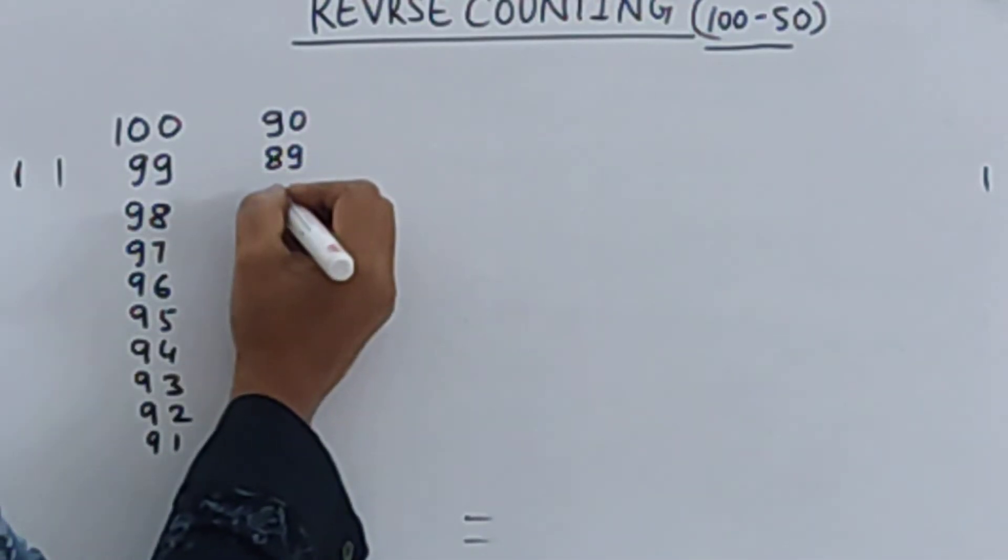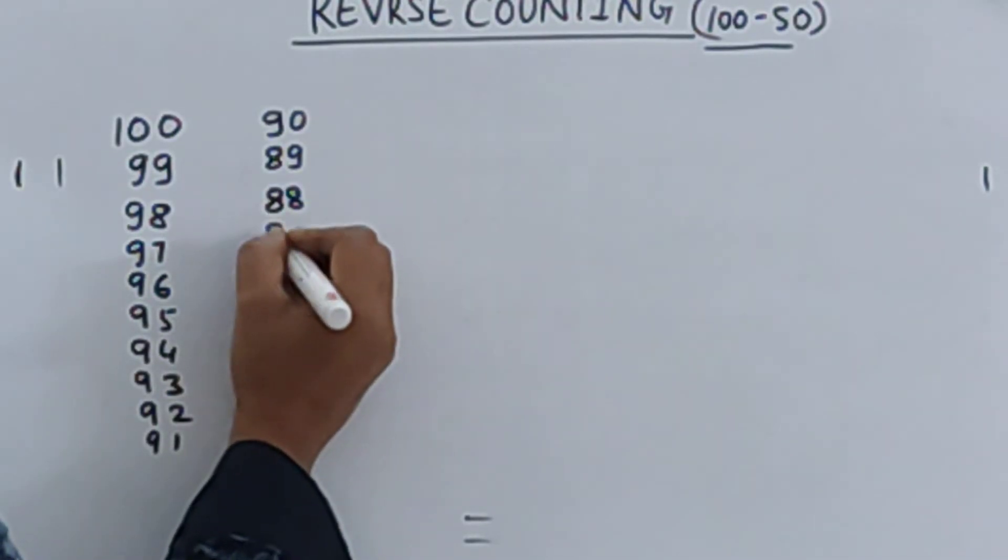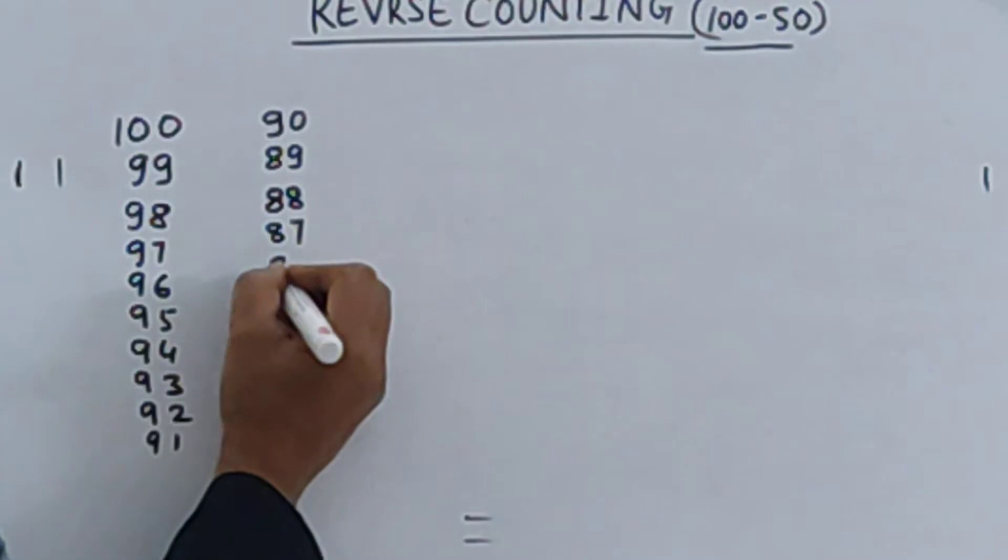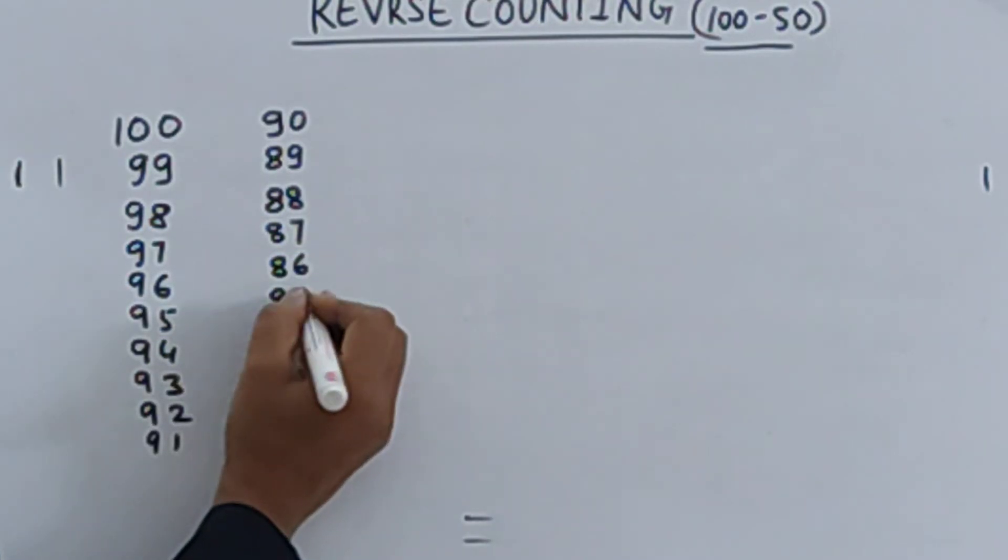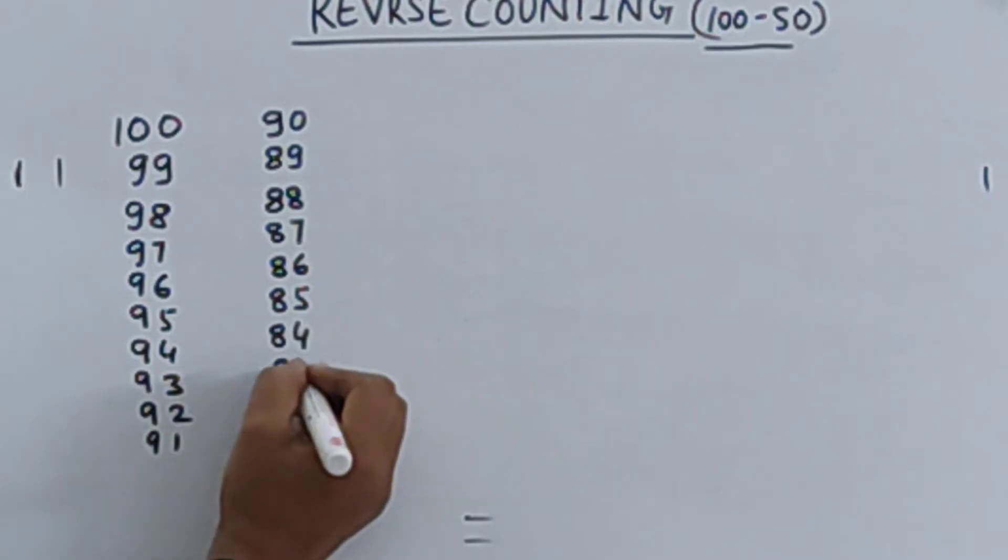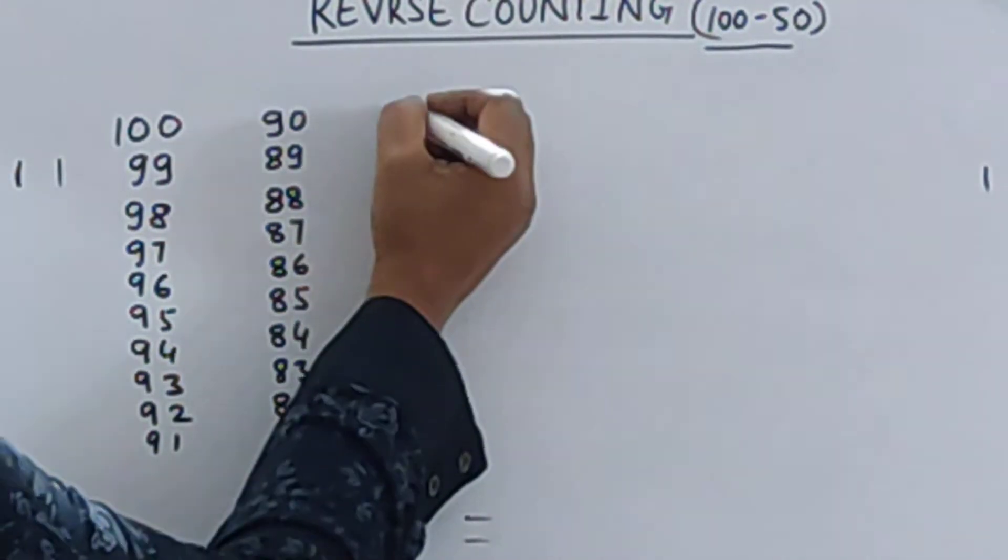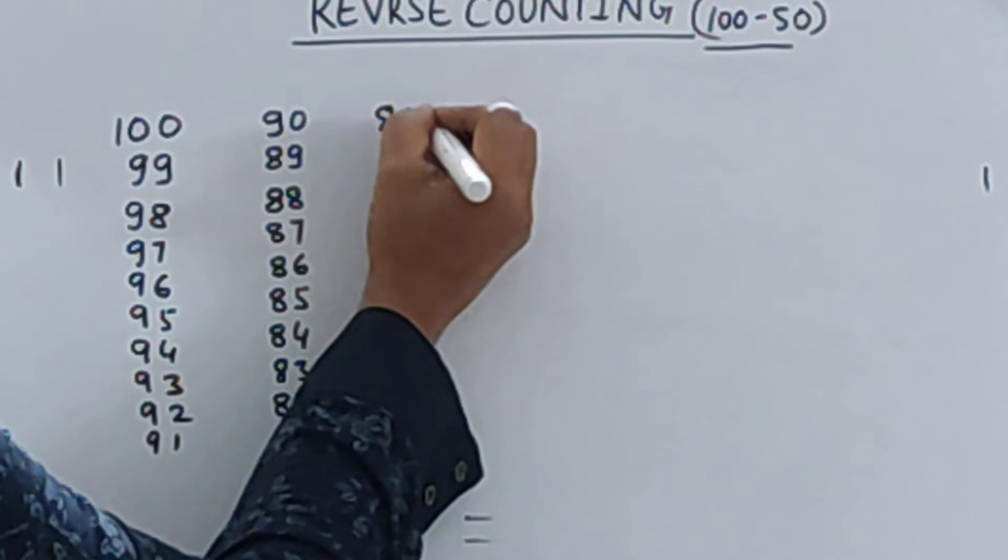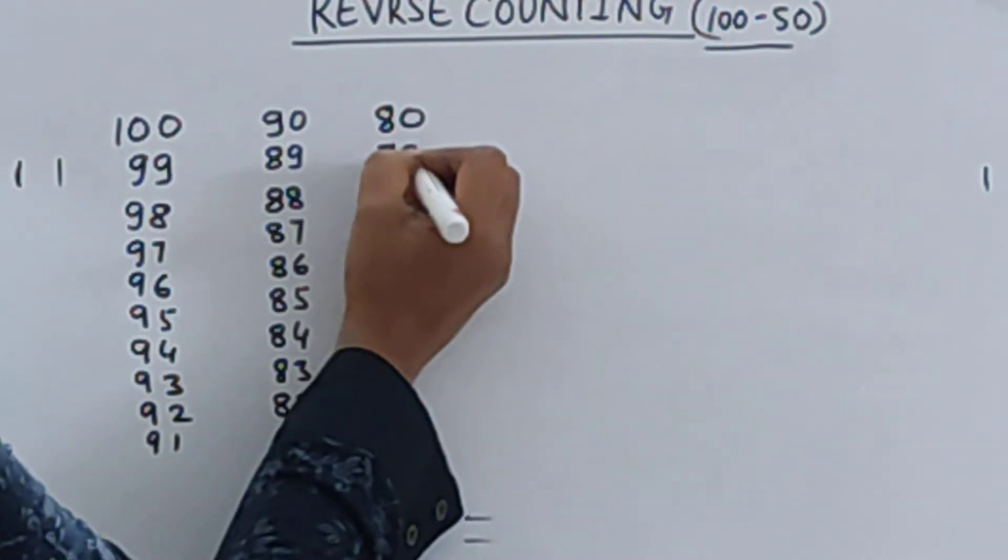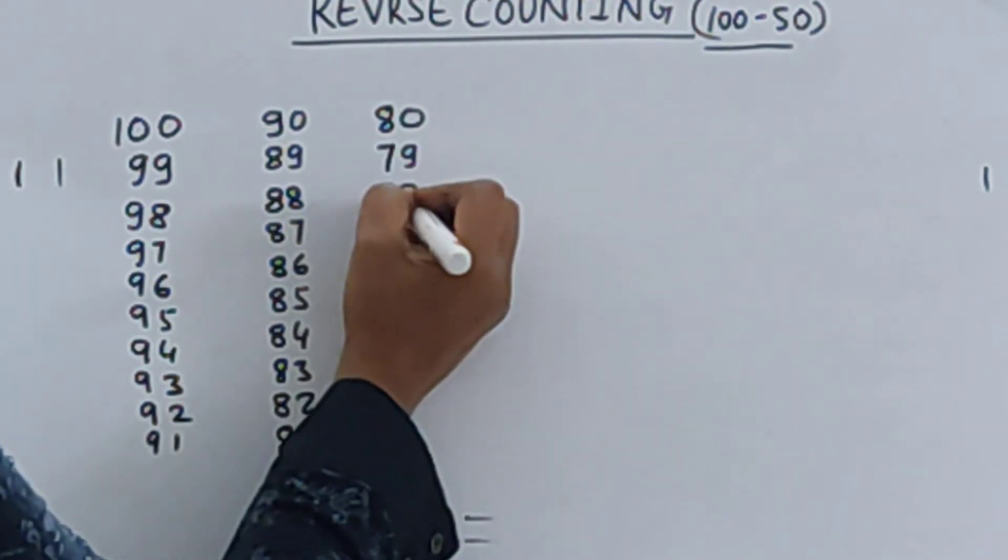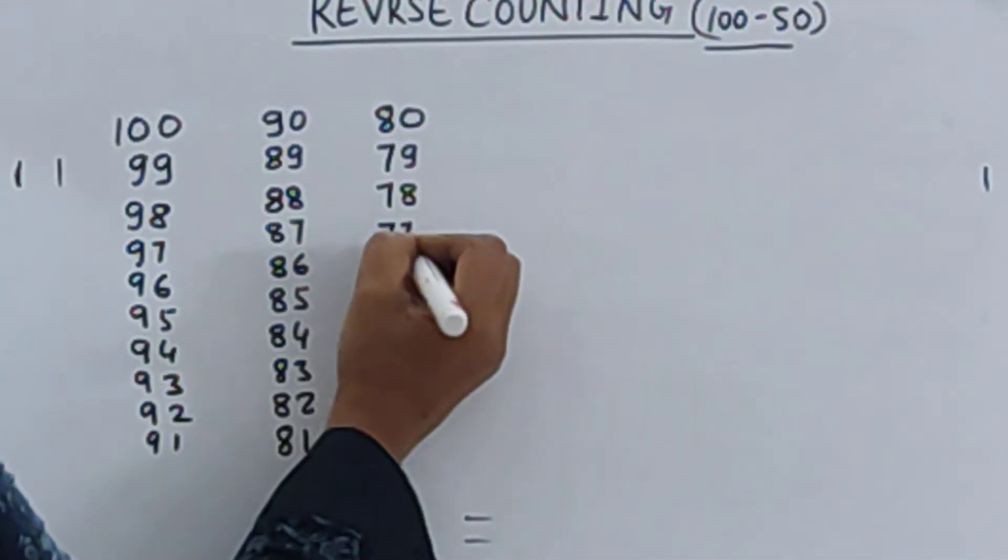89, 88, 87, 86, 85, 84, 83, 82, and 81. Before 81 what comes? 80.